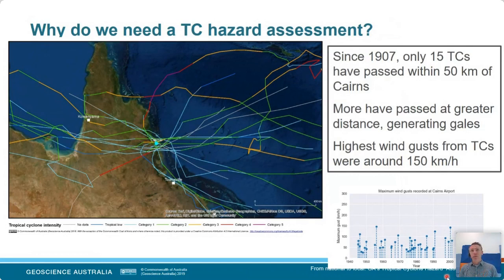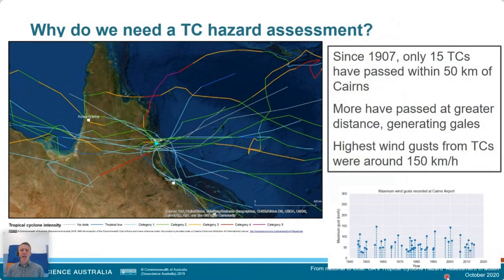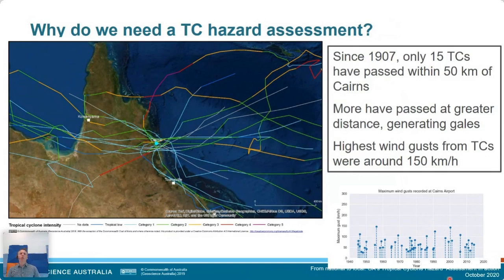Some old-timers in Cairns will tell you that around the time of Cyclone Larry they went through a Category 5 cyclone. But if we look at the historical record, the wind speeds in Larry at Cairns barely exceeded 100 kilometres an hour. It's because the strongest winds are obviously much closer to the core of the cyclone. While it might have been Category 5 at landfall, certainly the community of Cairns didn't experience anything like that.